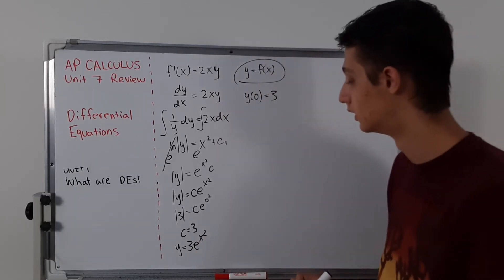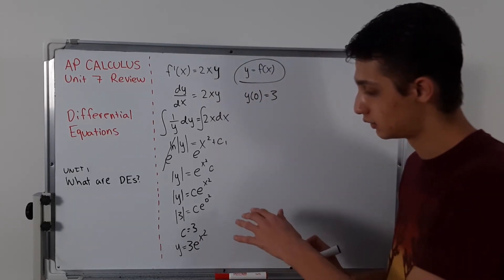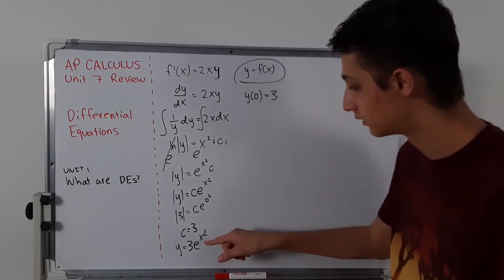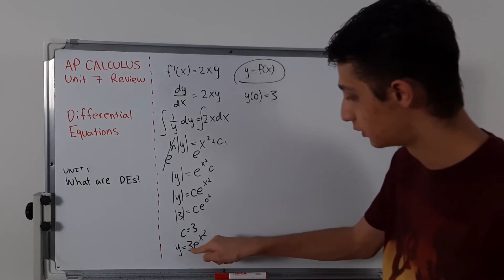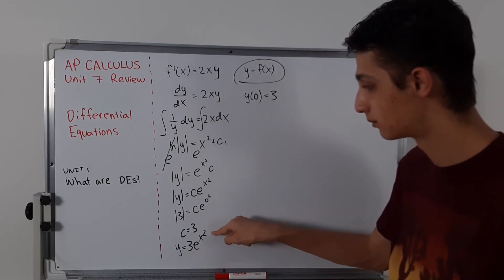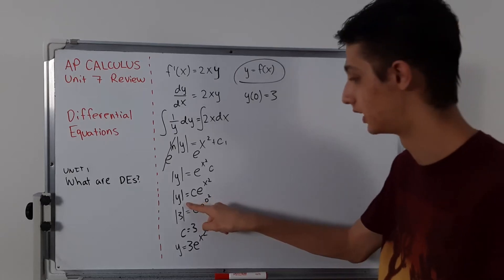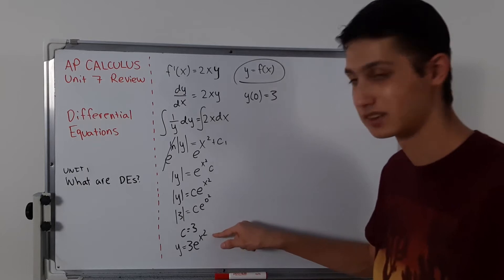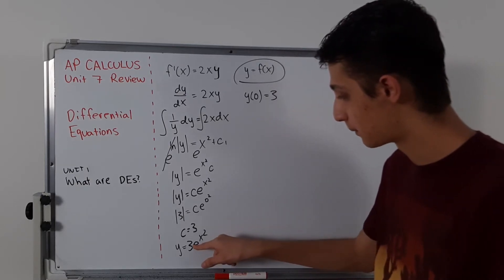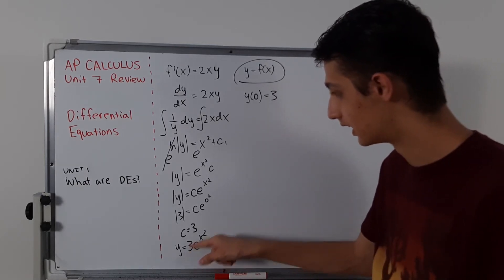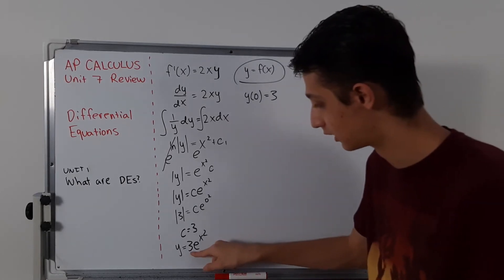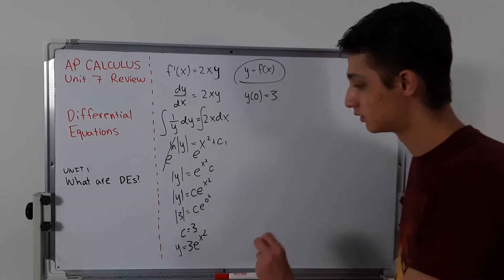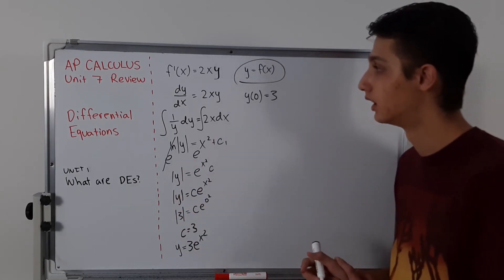That's our final answer. You might wonder how we know it's not negative 3e to the x squared. You can check easily: if it were negative 3e to the x squared, plugging in the initial condition would give negative 3 equals 3, which doesn't work. So we confirm the positive version.